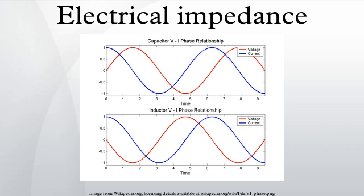Phasor basis: a phasor is a constant complex number, usually expressed in exponential form, representing the complex amplitude of a sinusoidal function of time. Phasors are used by electrical engineers to simplify computations involving sinusoids, where they can often reduce a differential equation problem to an algebraic one. The impedance of a circuit element can be defined as the ratio of the phasor voltage across the element to the phasor current through the element, as determined by the relative amplitudes and phases of the voltage and current. This is identical to the definition from Ohm's law, recognizing that the factors of e^jωt cancel.